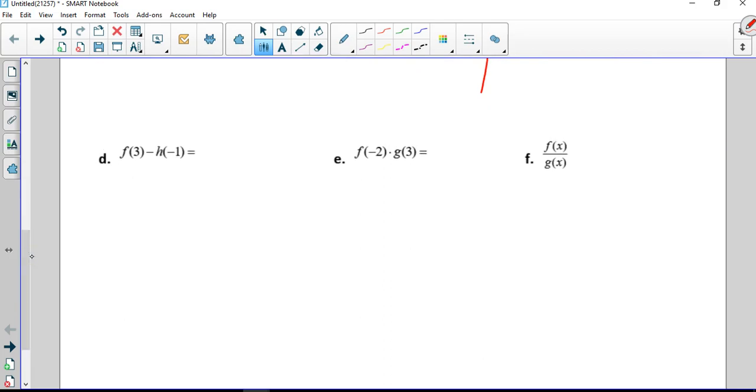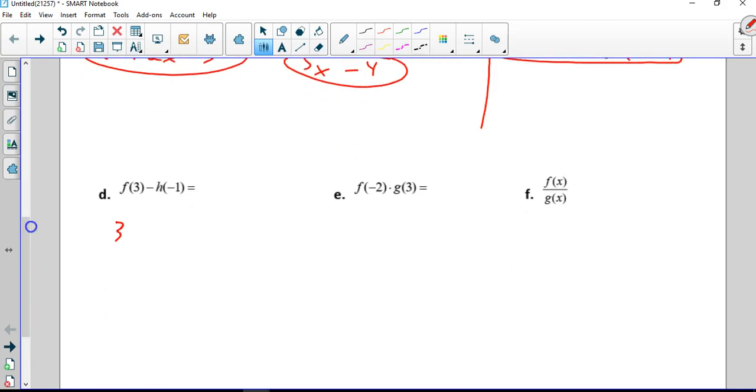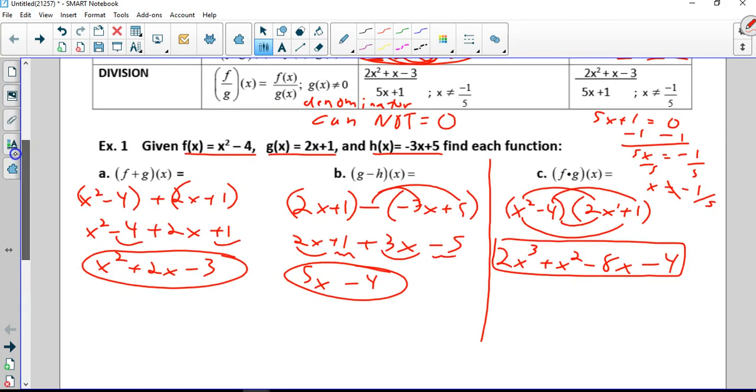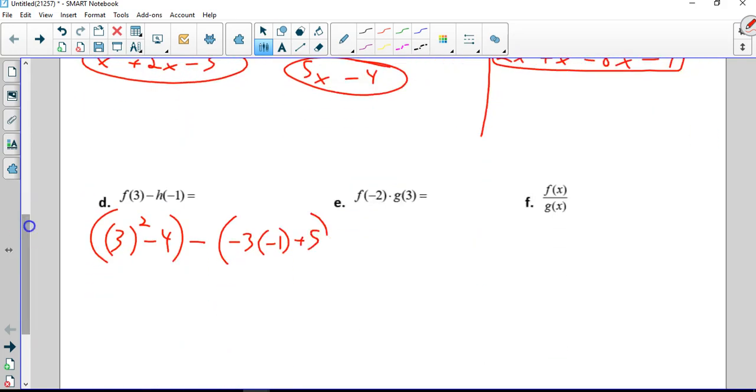f of 3 minus h of negative 1. So we're going to plug 3 into f. x squared minus 4, so 3 squared minus 4, minus h which is negative 3x plus 5, so negative 3 times negative 1 plus 5. We're going to simplify. 3 squared is 9 minus 4, negative 3 times negative 1 is positive 3 plus 5. So this is going to be 5 minus 8, or negative 3.